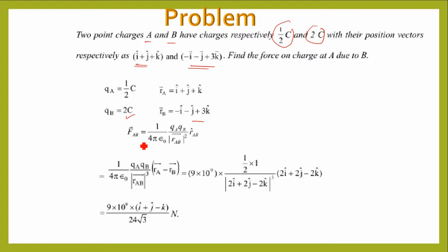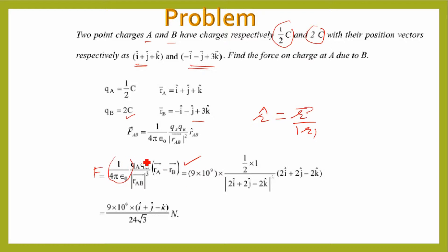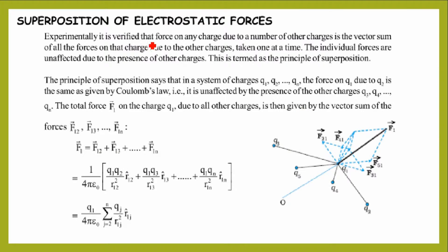The vector form formula is: F_AB vector = (1 / 4πε₀) × (Q_A × Q_B) / |r_AB|² × r̂_AB, where the unit vector is simply the vector divided by its magnitude. The value of 1/4πε₀ is 9 × 10⁹. Substituting the given charges and position vectors, you will get the final result.